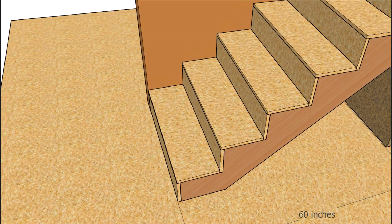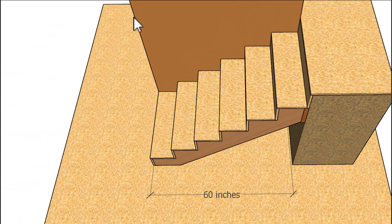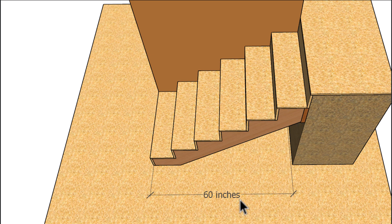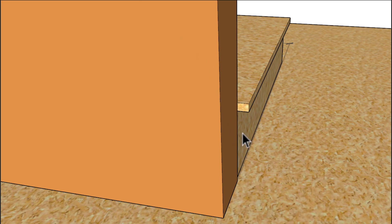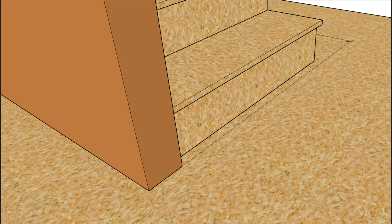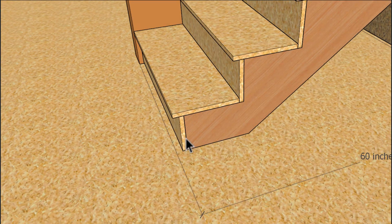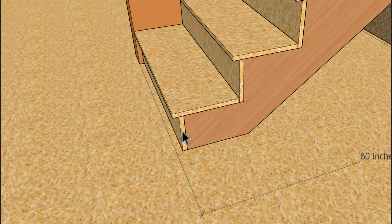So pay attention, and if you have to, watch the video a couple of times until you can wrap your mind around this. Now what if you have a nosing on the stairs? Well, you guessed it. You're going to have to move the flight of stairs back even further. So not only will you need to deduct for the thickness of the riser, you will also need to deduct for the length of the overhang. And in our case here we have a one-inch overhang.